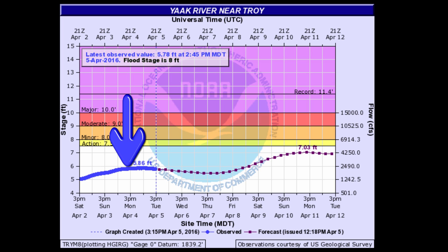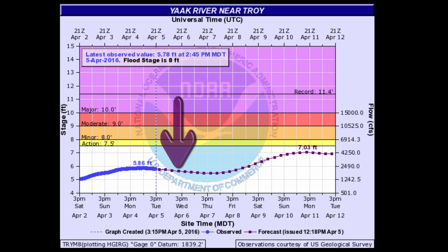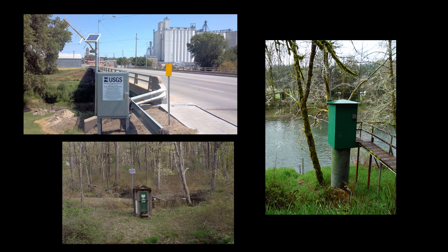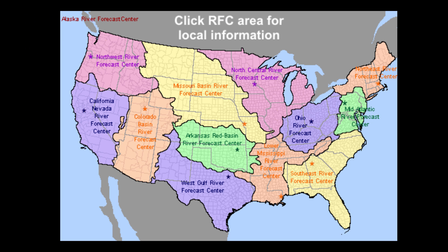On the left side of the image, the blue dots represent the observed river height and flow, while on the right side, the purple squares signify the forecast height and flow. The observed stage points are measured via a United States Geological Survey sensor located in the river. The forecast points come from the National Weather Service River Forecast Centers found across the country.